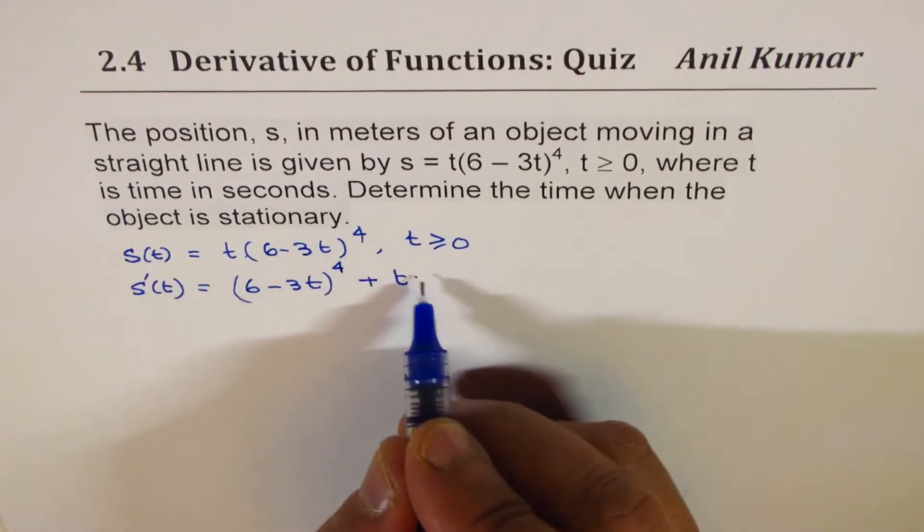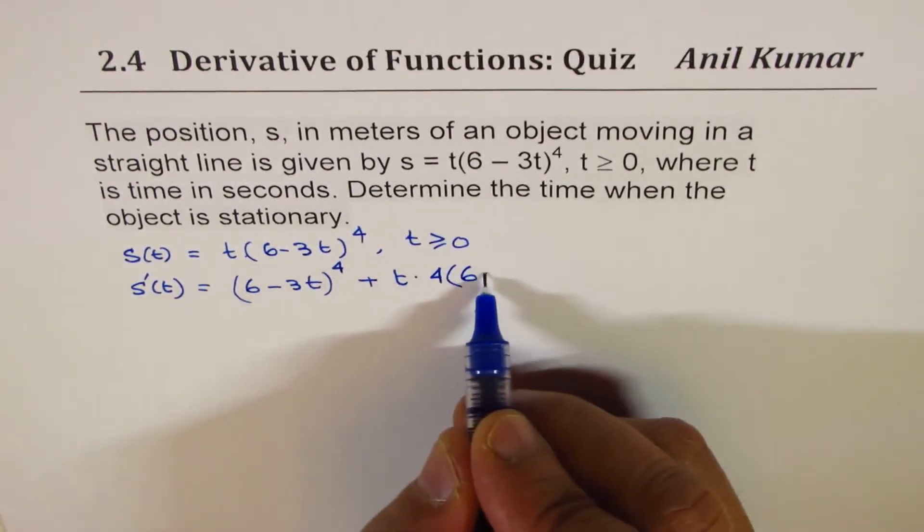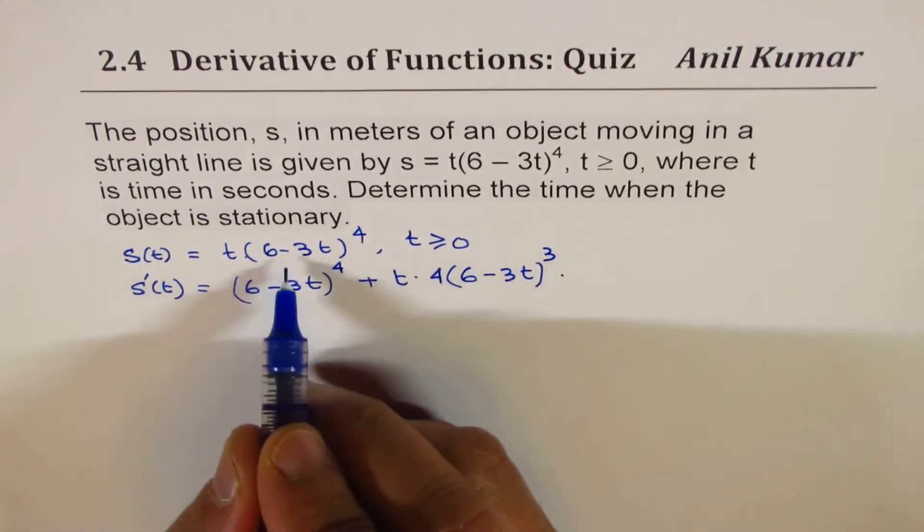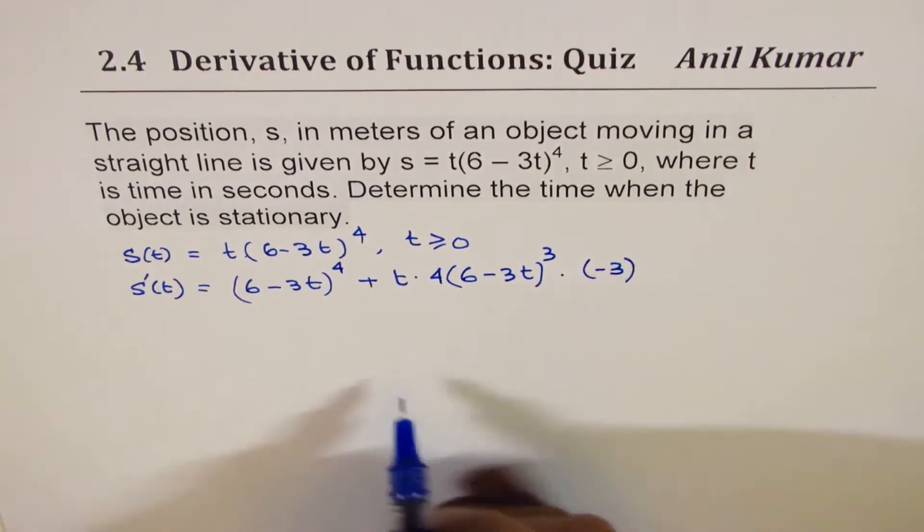So 4 times we will apply the power rule for the functions, 6 minus 3t cube times derivative of inside function which is minus 3.